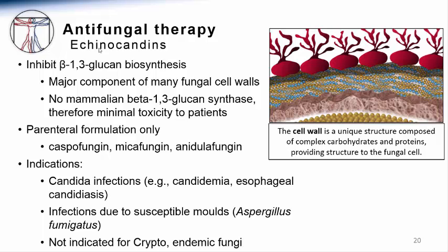The echinocandins are primarily indicated for serious infections due to many Candida species. They are often the first-line agents for candidemia or Candida bloodstream infection, being effective against most Candida species. They can also be used for serious mucosal infections due to Candida, such as Candida esophagitis. The echinocandins do have activity against molds such as Aspergillus fumigatus; however, most clinicians do not regard them as first-line therapy for aspergillosis. It is important to remember that echinocandins should not be used to treat cryptococcal infections or endemic fungal infections, as they have no appreciable activity against Cryptococcus neoformans and are inferior to azoles for histoplasmosis and blastomycosis.